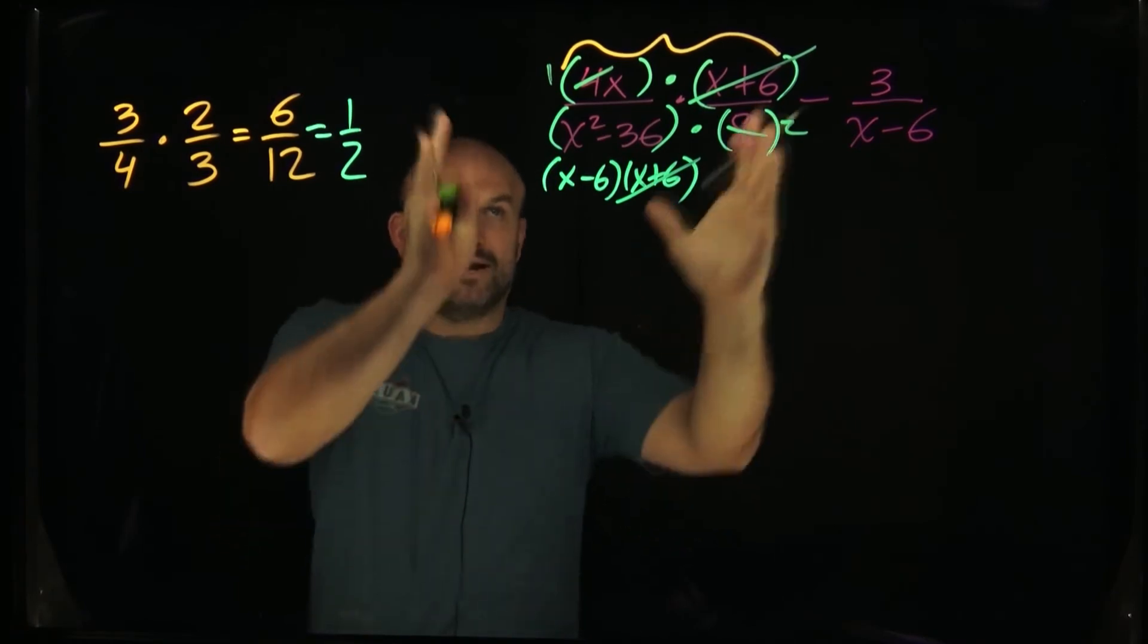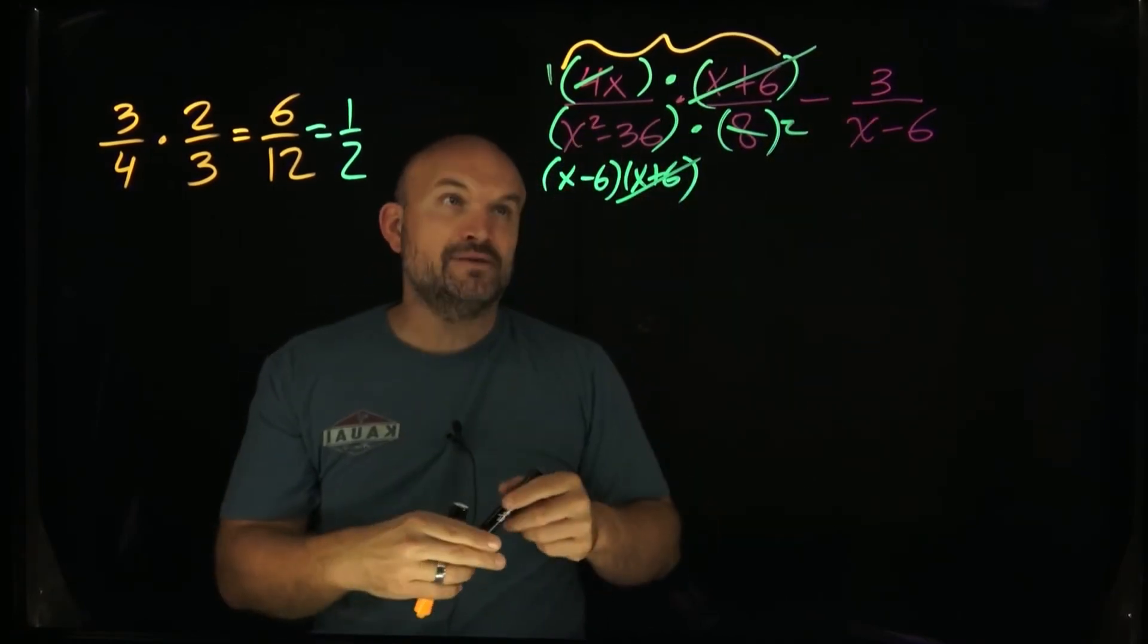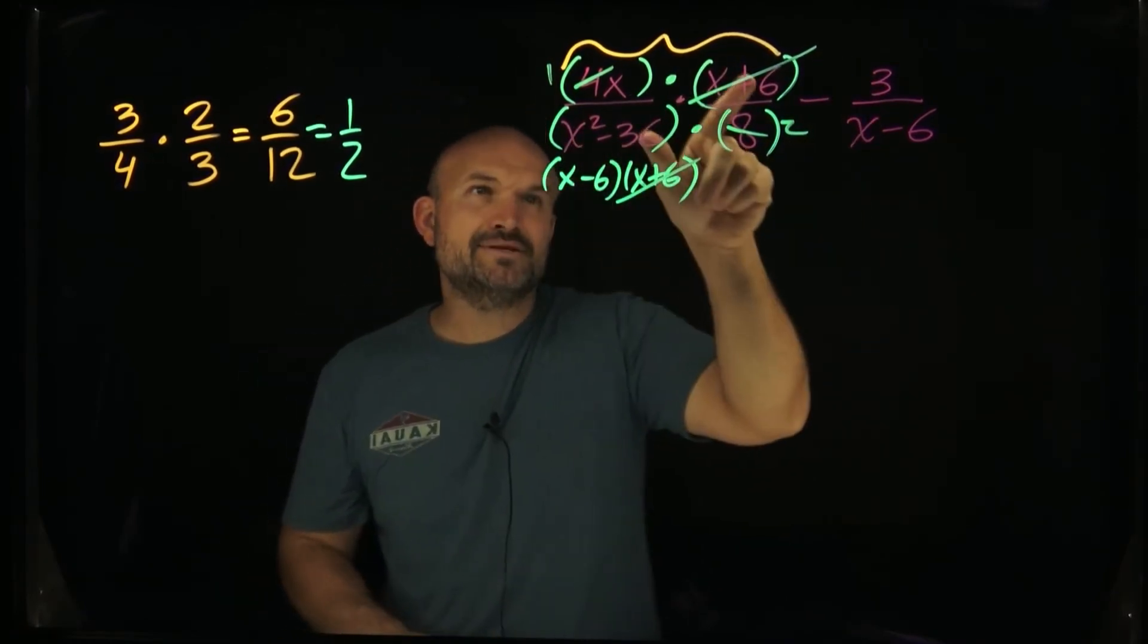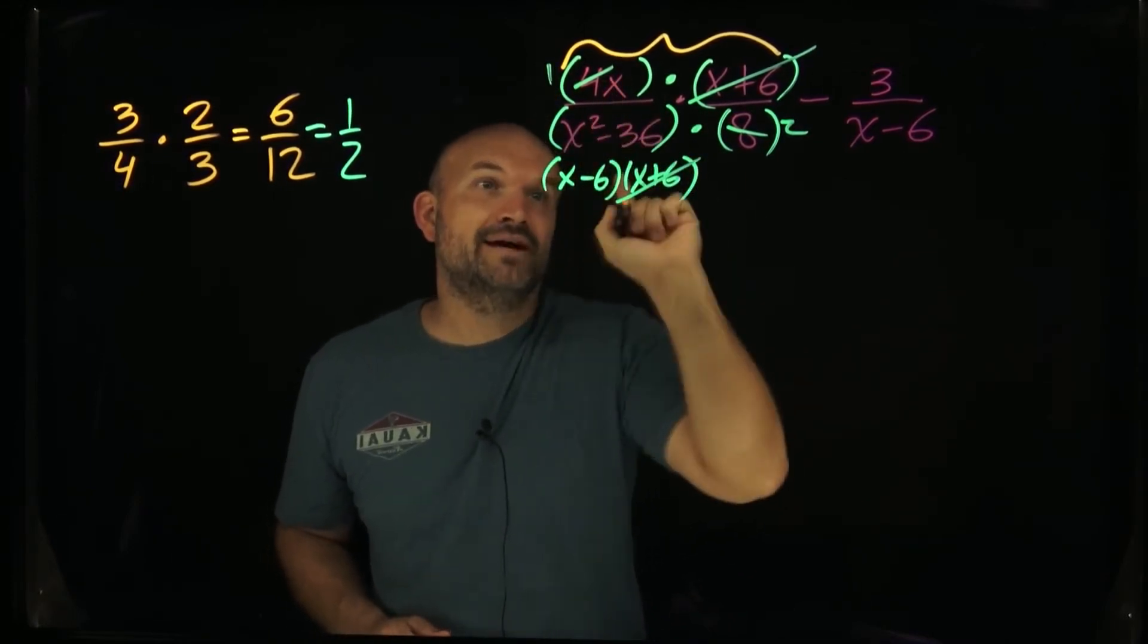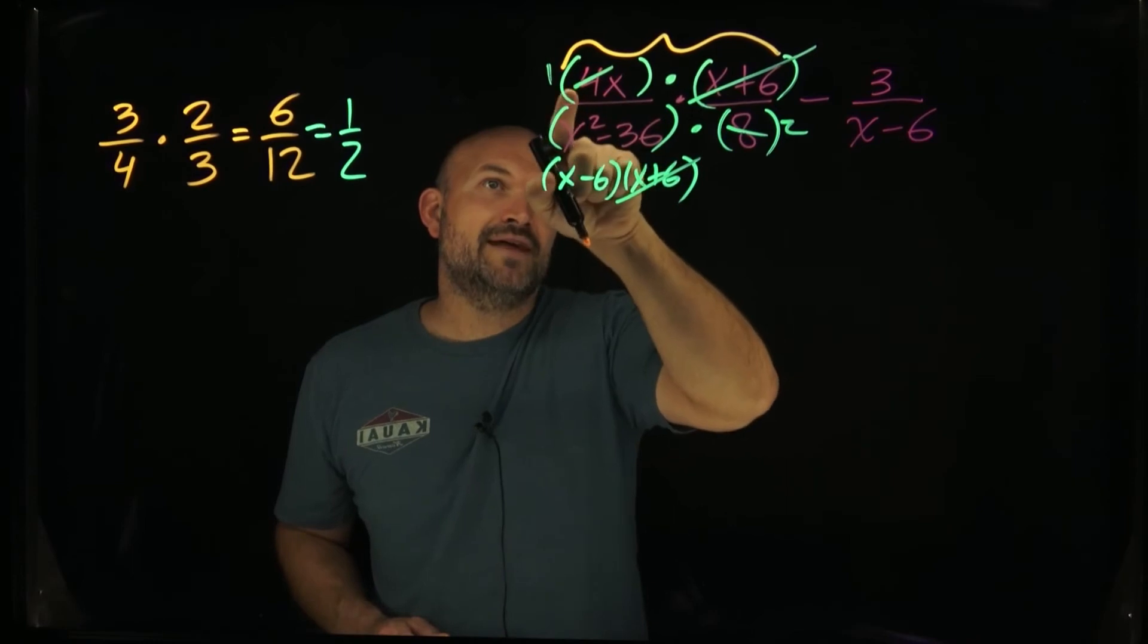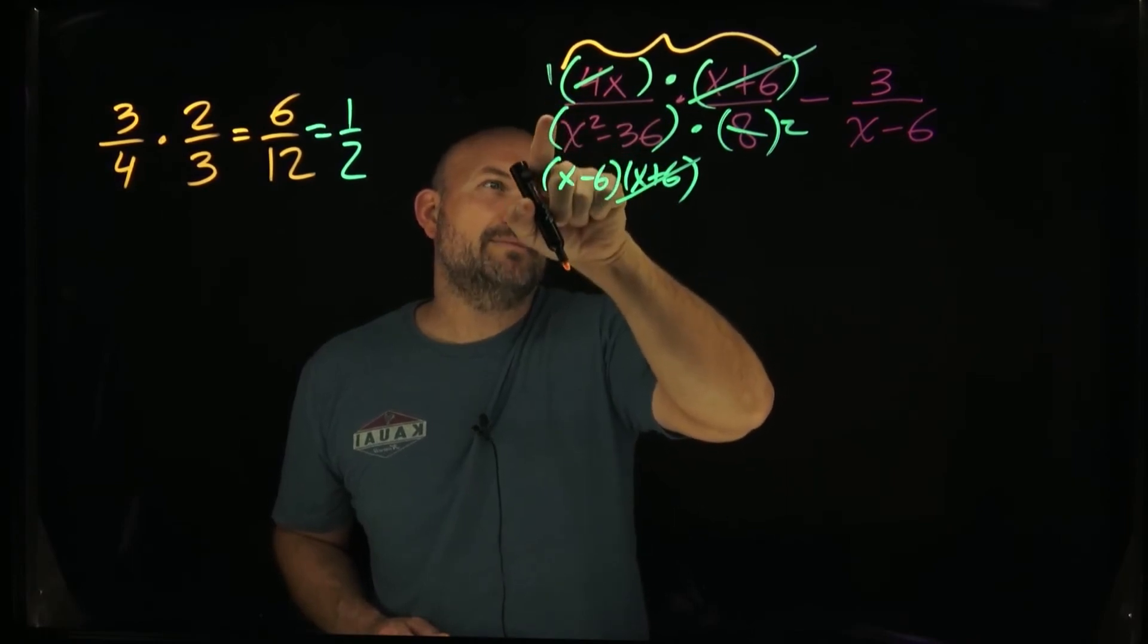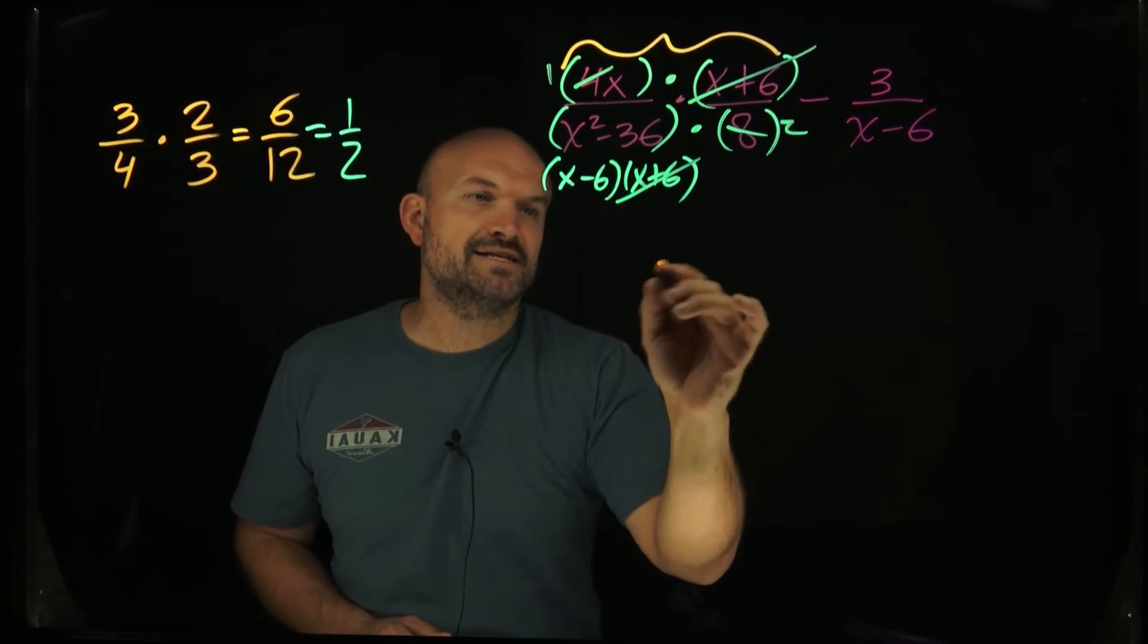So now when I go ahead and multiply this out, I'm going to be left with 1 times x. That's going to be good. So I'll have 1 times x. That got divided out. So it's going to be x.